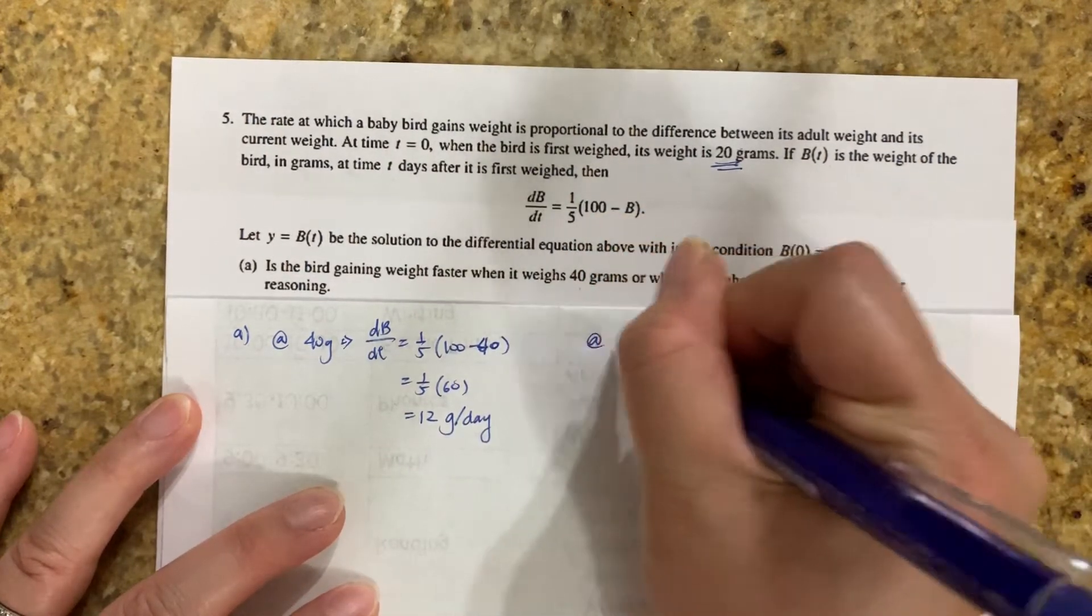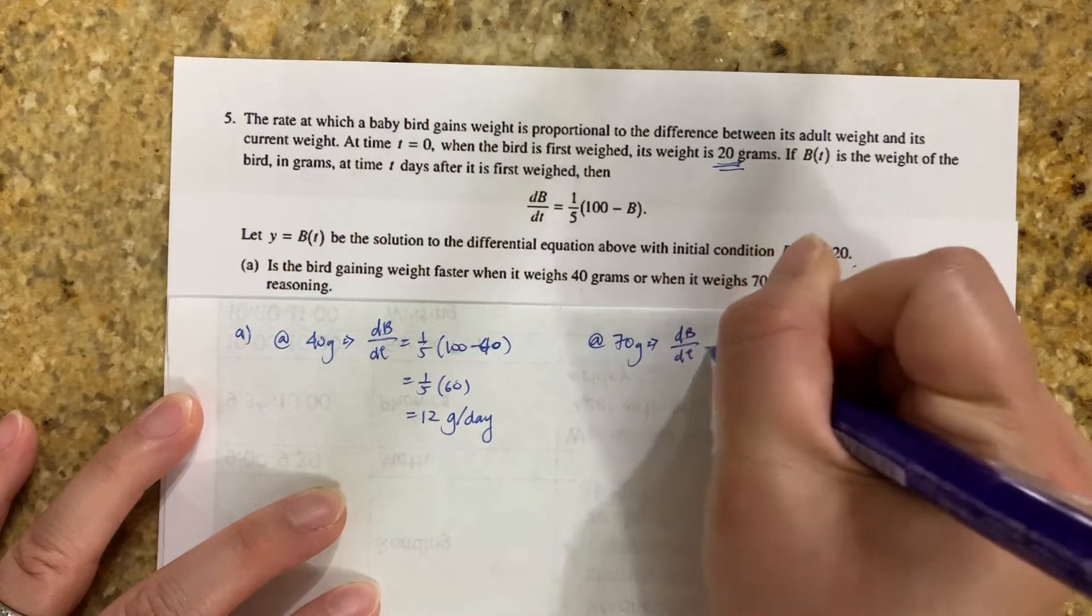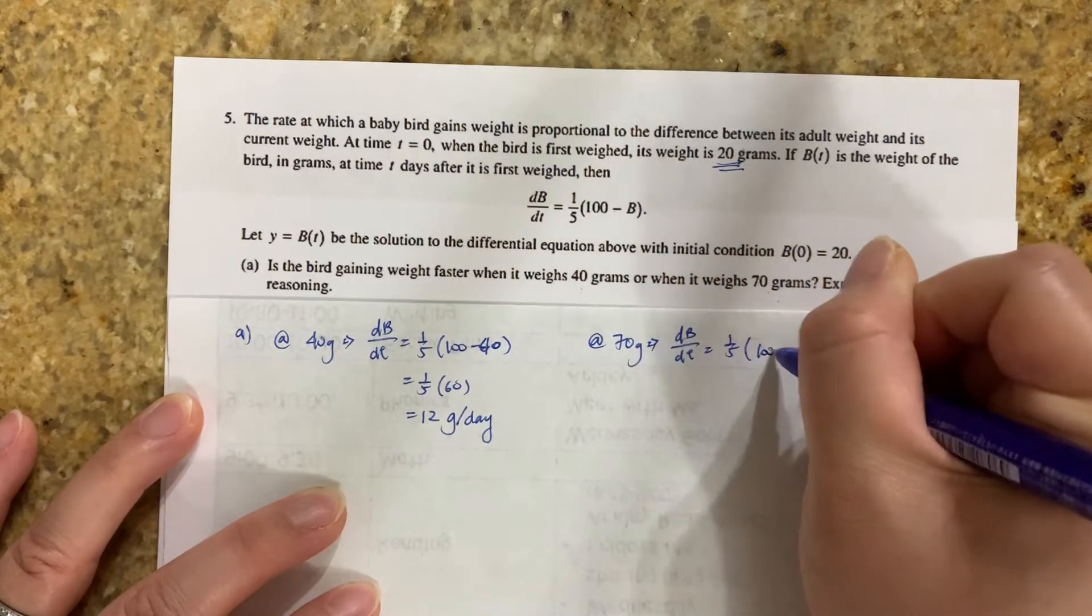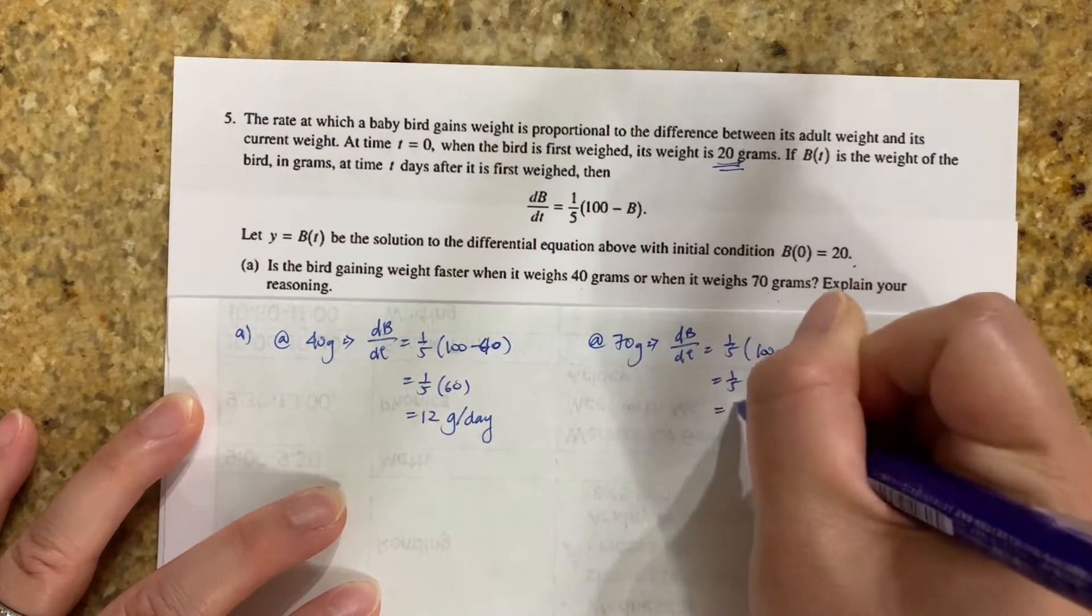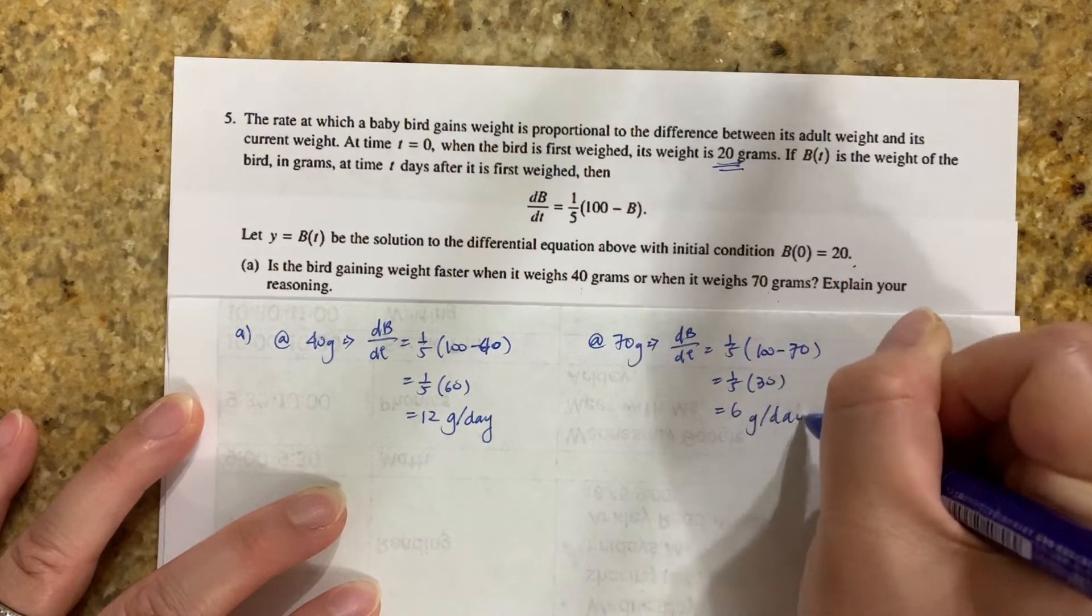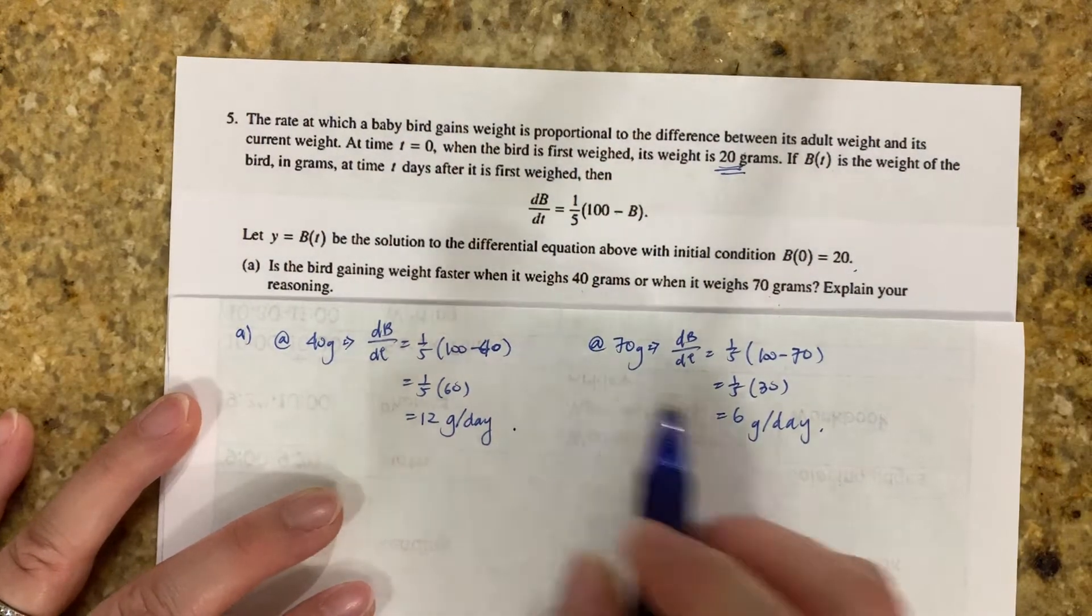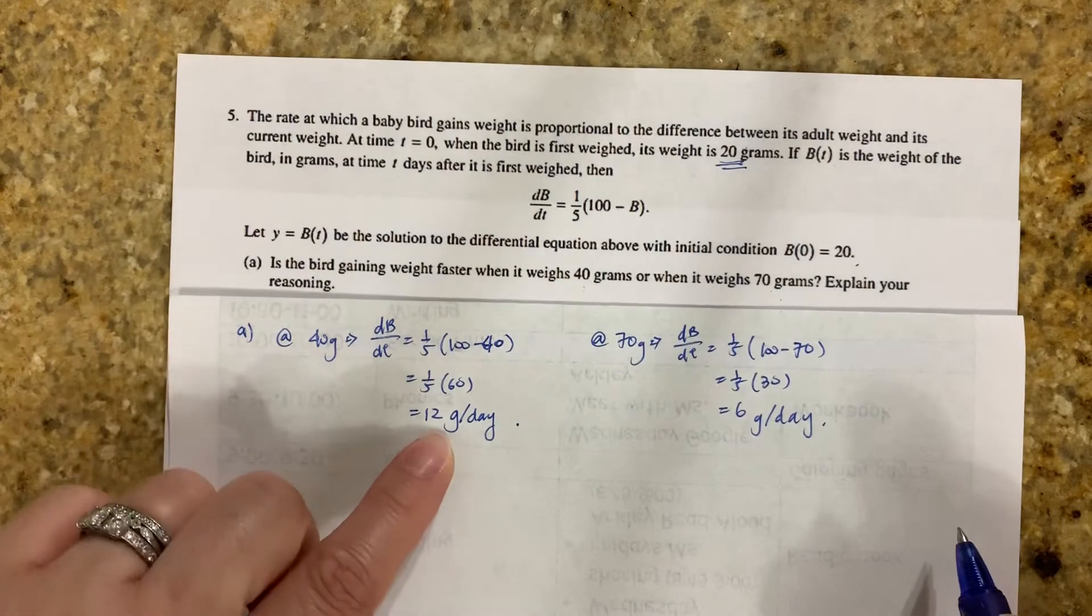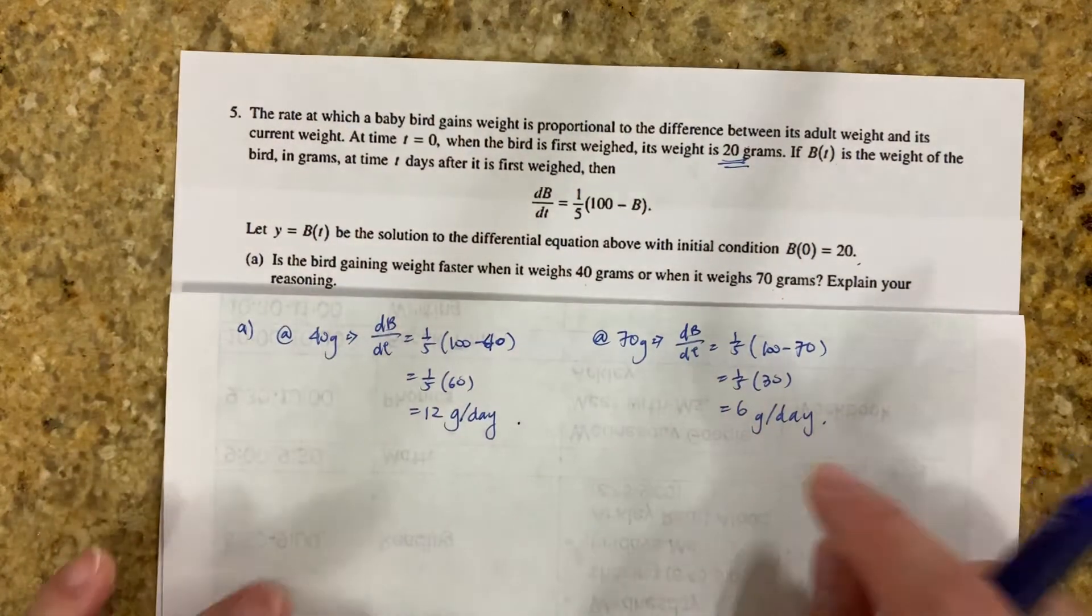Then at 70 grams, db over dt equals 1/5 times 100 minus 70. That's 1/5 times 30. That's 6, 6 grams per day. So when is it gaining weight faster? It's gaining weight faster at 40 grams because it's gaining 12 grams a day. And then as it got bigger, it slows down to 6 grams a day.